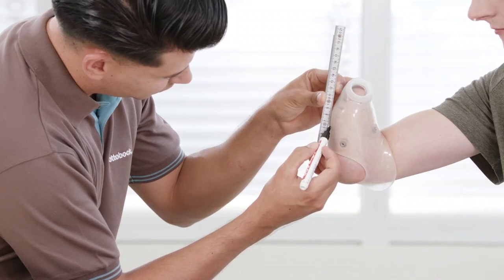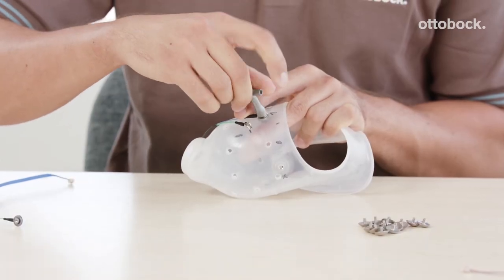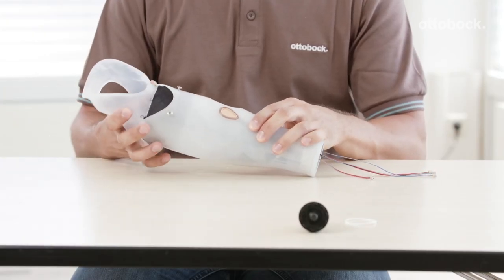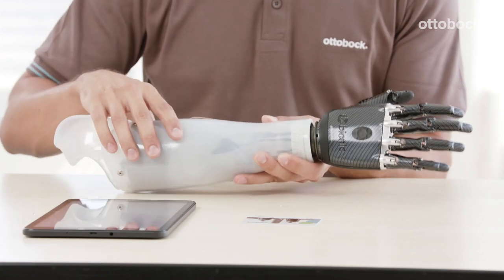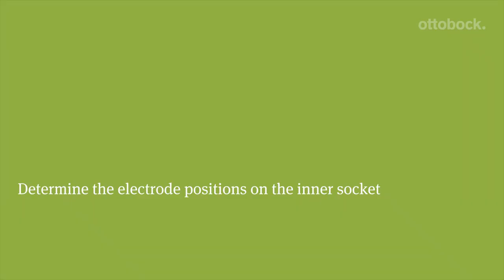After a successful evaluation with the MyoCuff in step 1, the second step is to create a MyoPlus Interim's prosthesis. This video demonstrates how to position and mount electrodes on the inner socket, how to wire the system, and how to test the functionality.